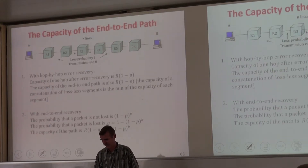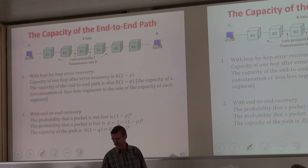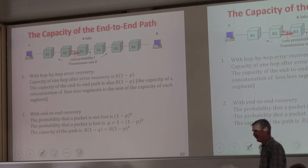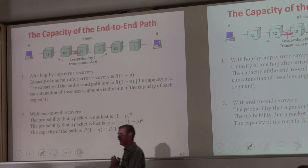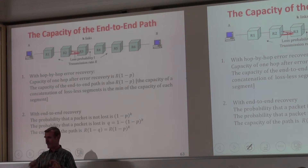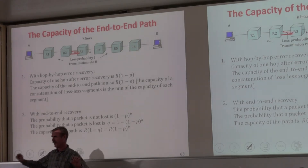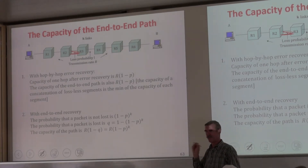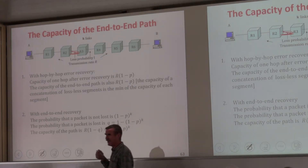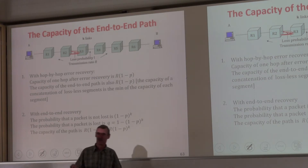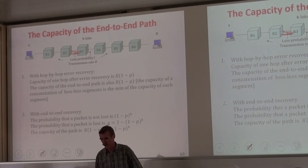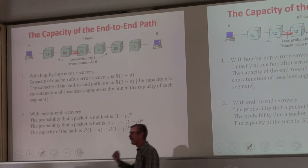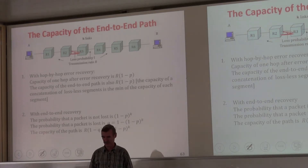The correct answer is number two. The capacity of one link — say from R2 to R3 — from our information theory theorem is R times (1 minus P), approximately 9 megabits per second. If you have K tubes each with capacity 9 megabits per second and put them end to end, it's a piping problem. The capacity is 9 — the minimum of the series. You can put 9 megabits per second into the first link, and those 9 megabits can be forwarded by each subsequent link. So the capacity of the combination of lossless segments in series is the minimum, which equals R times (1 minus P).